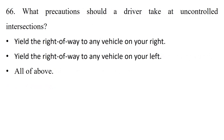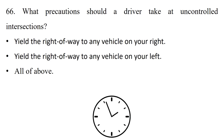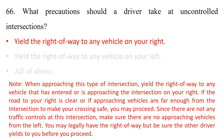Question: What precautions should a driver take at uncontrolled intersections? Option 1: Yield the right of way to any vehicle on your right. Option 2: Yield the right of way to any vehicle on your left. Option 3: All of the above. The answer is option 1: yield the right of way to any vehicle on your right. When approaching an uncontrolled intersection, yield to any vehicle that has entered or is approaching the intersection on your right. If the road to your right is clear, you may proceed — but make sure there are no approaching vehicles from the left as well.